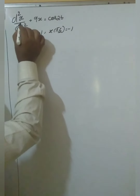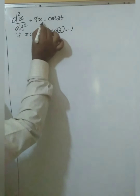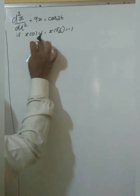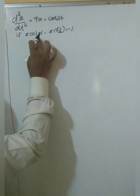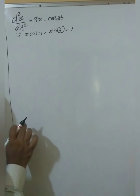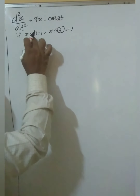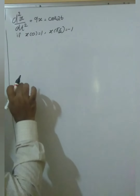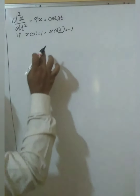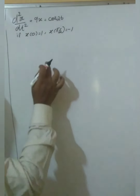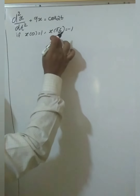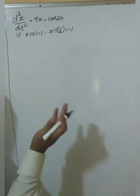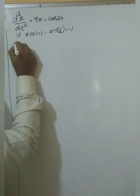Since this is a second order differential equation, we need two initial values. One is x(0) and x'(0). But x'(0) is not given, so we take x'(0) equal to some constant k.